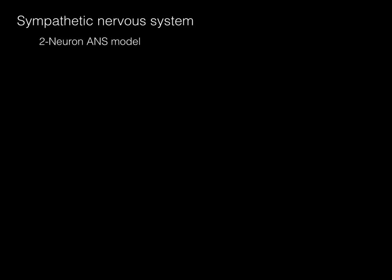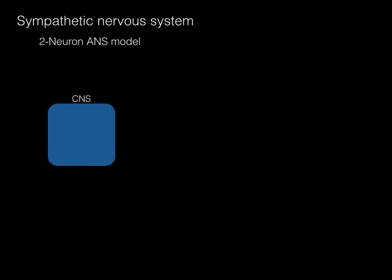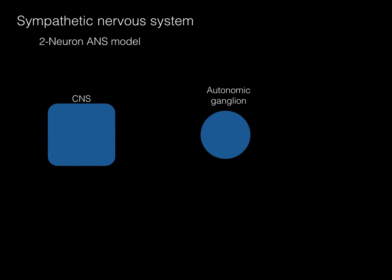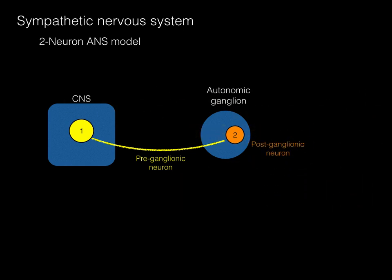The two-neuron ANS model is the following: we have a CNS origin and an autonomic ganglia destination. The preganglionic neuron arises in the central nervous system and sends its axon to a peripheral autonomic ganglion. Then the cell body of the postganglionic neuron goes out and hits some target organ. There we have it — the two-neuron model.